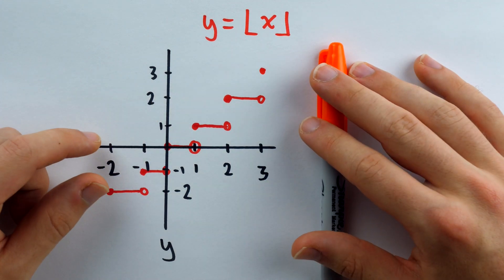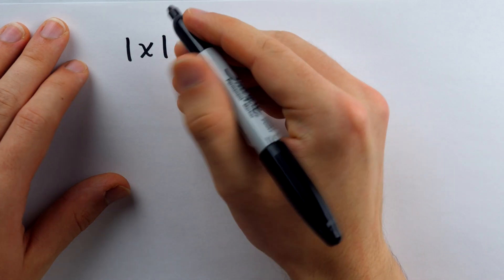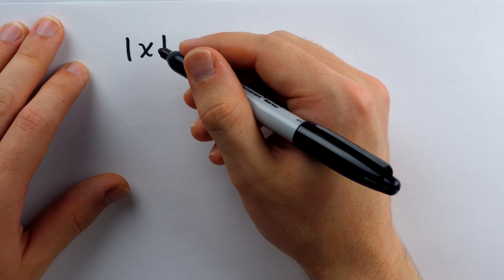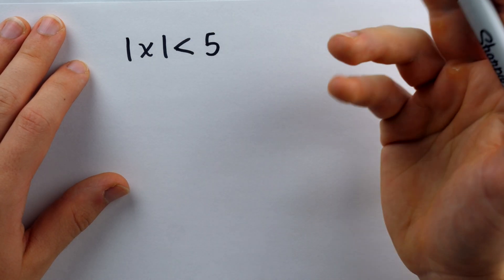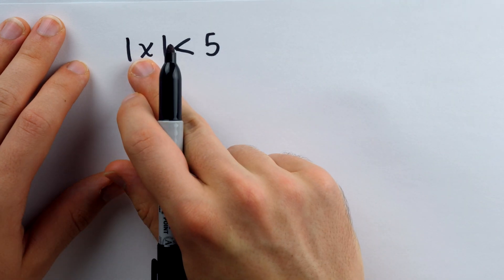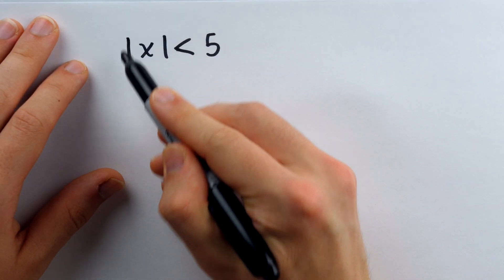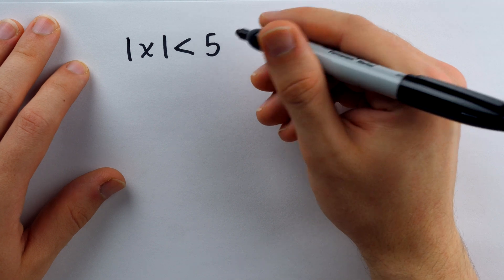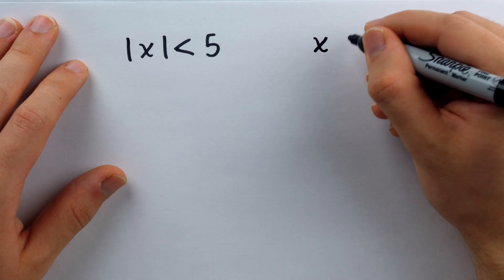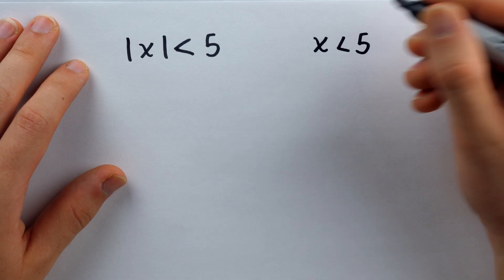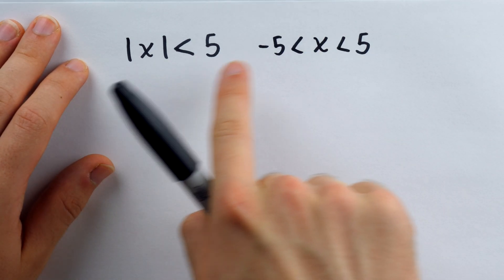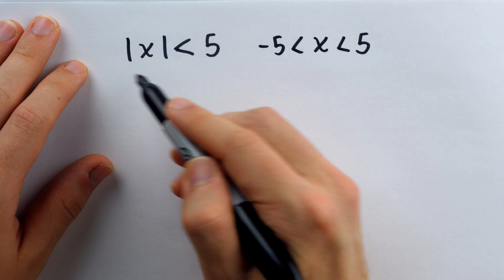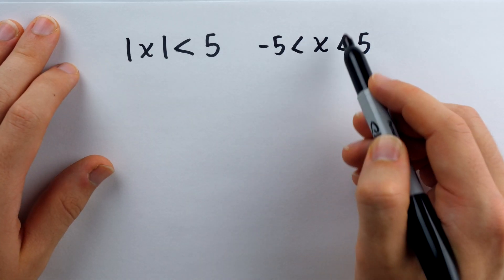Let's look at some more properties of this function. You're probably familiar with the absolute value function. And oftentimes, when dealing with absolute value, it can be useful to change an absolute value inequality into an inequality without the absolute value. For example, if I say the absolute value of x is less than 5, that's the same as saying that x is less than 5, but greater than negative 5. These two inequalities are equivalent.